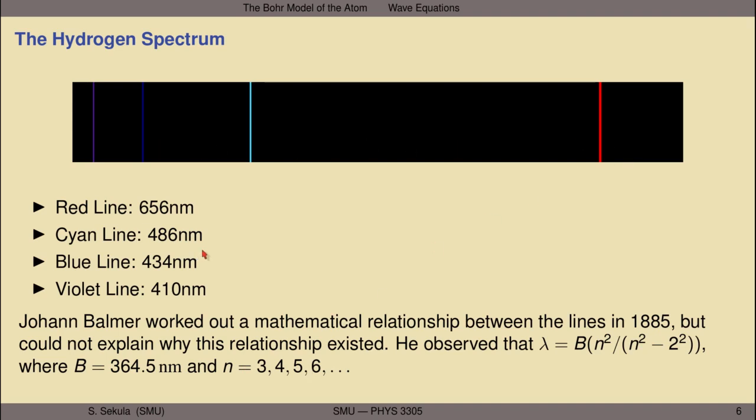But why? Why is there a clear mathematical relationship between these colored lines emitted from hydrogen, and why are there similar mathematical relationships between the colored lines emitted from other atoms when ionized? These are deep questions, mysteries left over from the 1800s, that physics in its day could not explain.